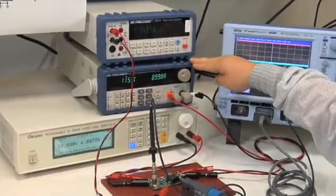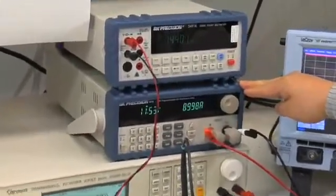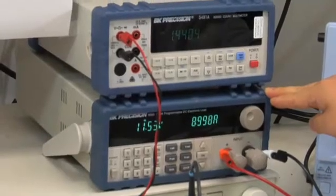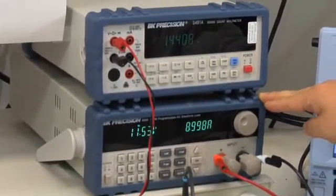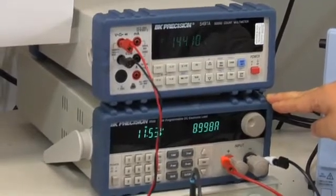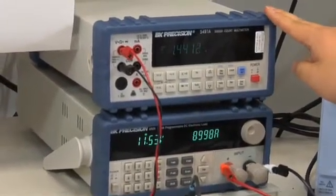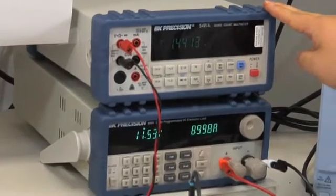Right now, load current is 9A. So with 8mΩ current sensor resistor, ideally output should be 1.42V. That is 1.44V now.